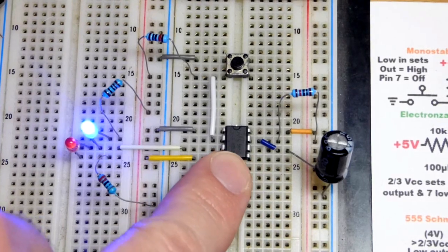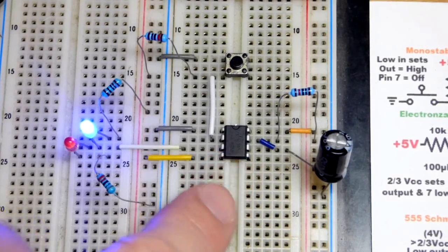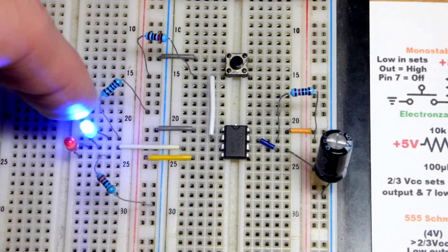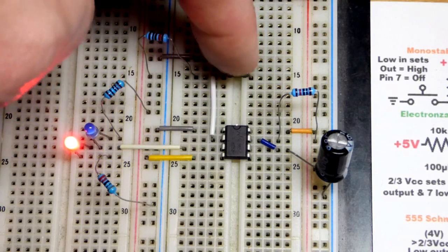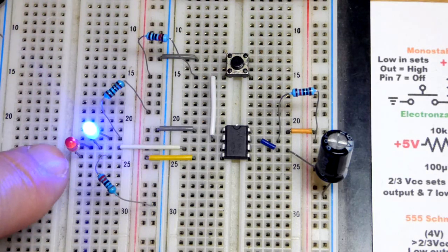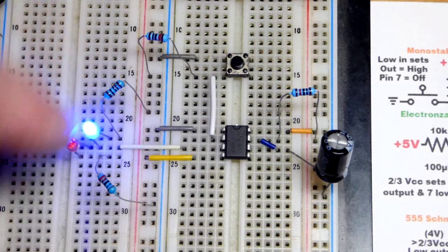So now in this video we're going to look at a 555 timer integrated circuit wired in monostable mode. Mono means one, there's one stable mode that is the output being low. We can set the output high but it's only for a timed period of time and then it goes back to low.